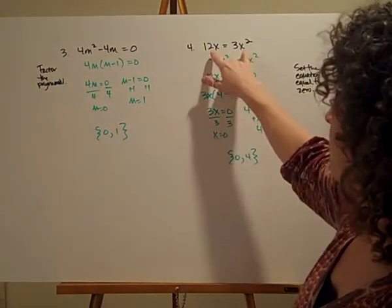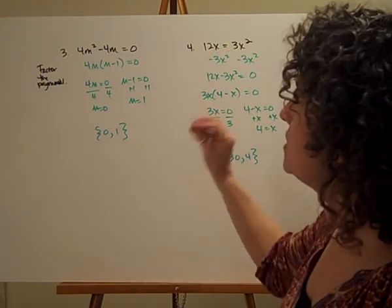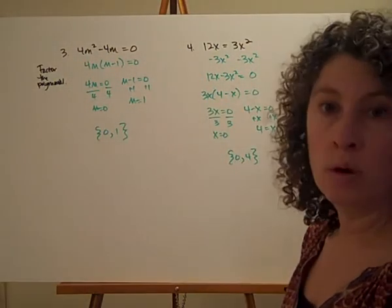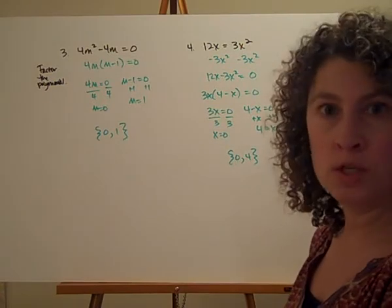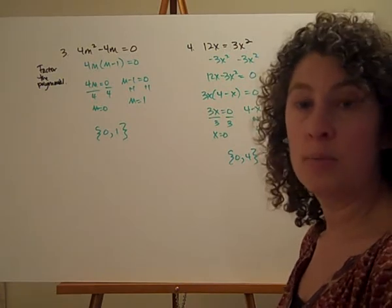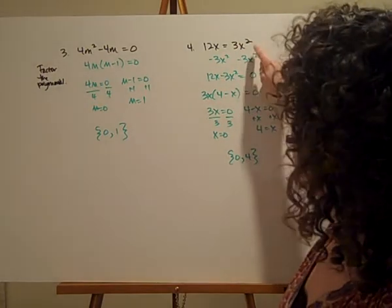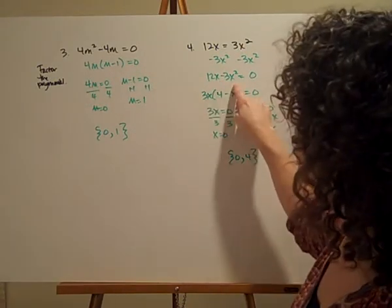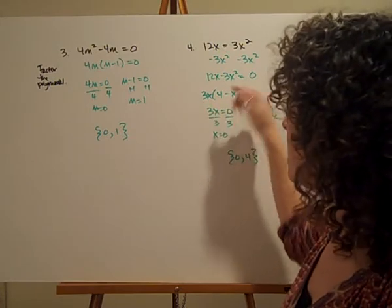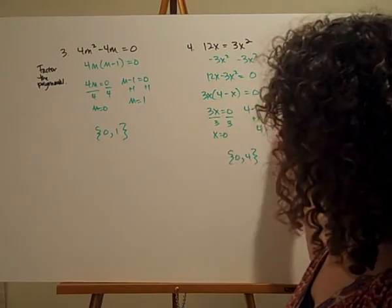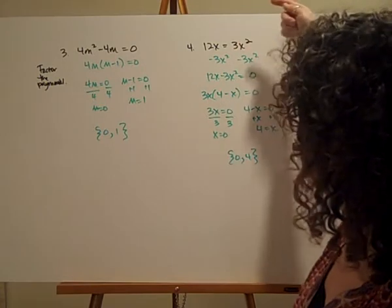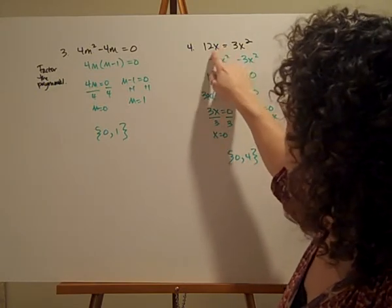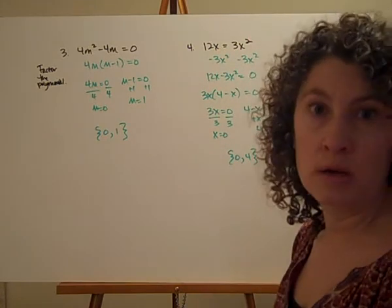The last example: I've got 12x equals 3x squared. Notice we need to set this equal to zero before we do anything, because it's the zero product property — we need a product equal to zero on one side. So I move 3x squared to the left side. Now it's equal to zero. I factor the polynomial by taking out 3x, giving 3x times the quantity 4 minus x equals zero. Setting each factor equal to zero gives x equals zero and 4 equals x. Checking: 12 times 0 equals 0, and 3 times 0 squared equals 0. And 12 times 4 is 48, and 3 times 16 is 48 also. Two solutions.